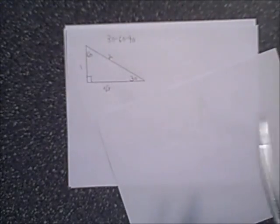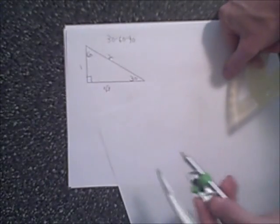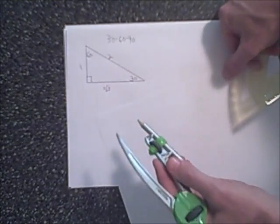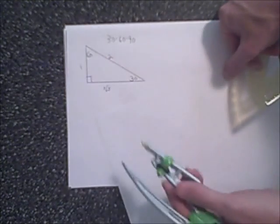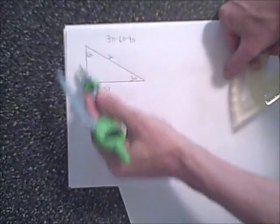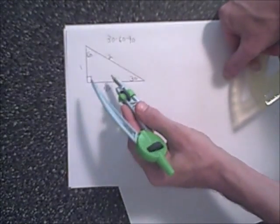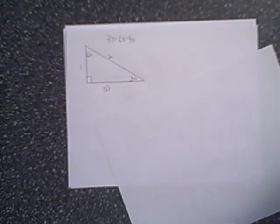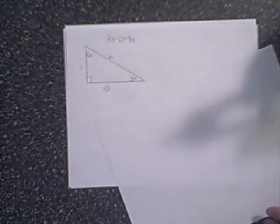Now method two for constructing a 30-60-90. As we noted before, if you note, the hypotenuse is twice the length of the small side. So if we can construct a triangle with a right angle, and then where the hypotenuse is twice the length of the small side, we would have a 30-60-90. So let's try to do that.